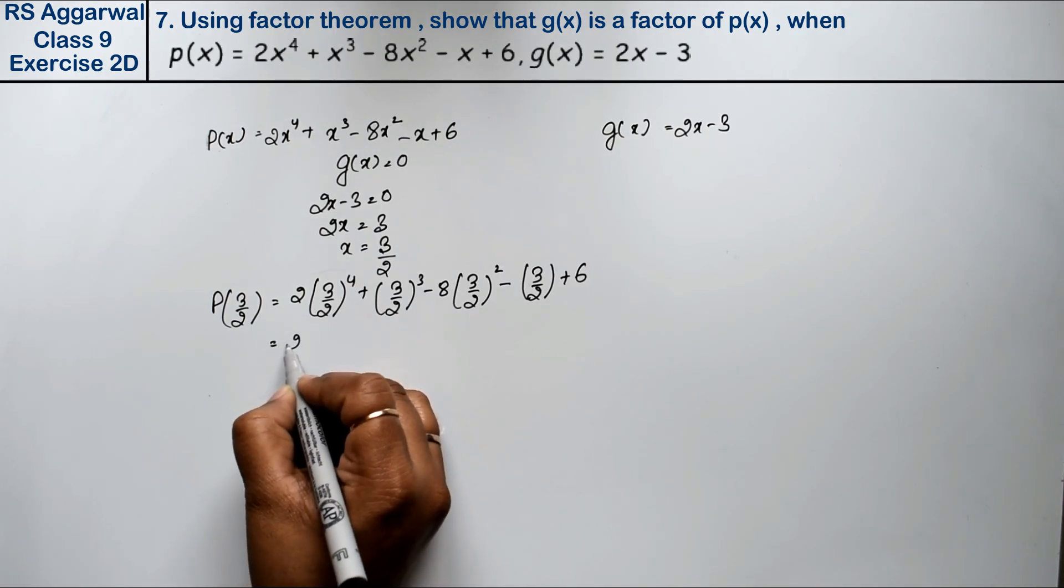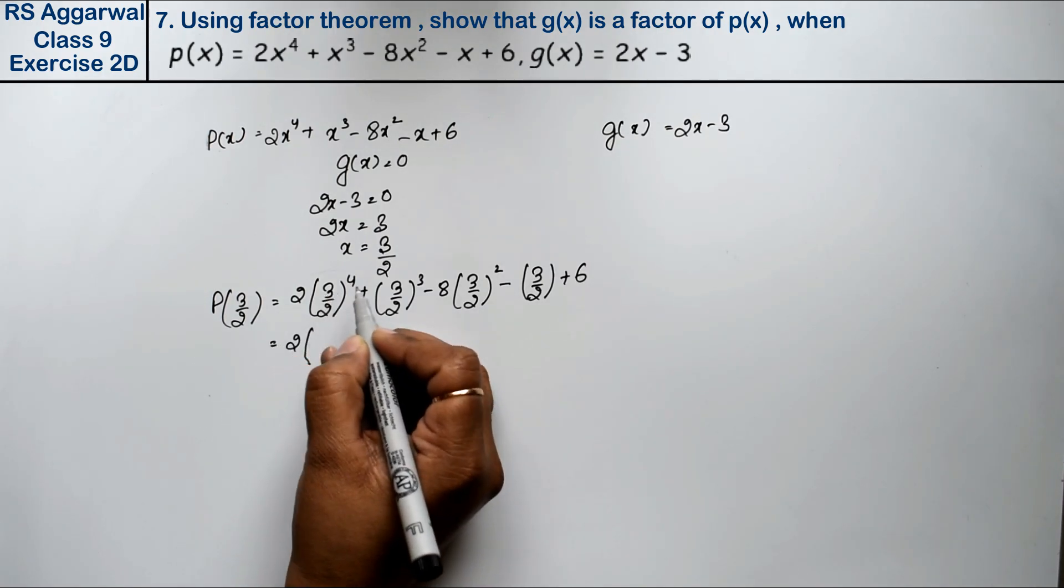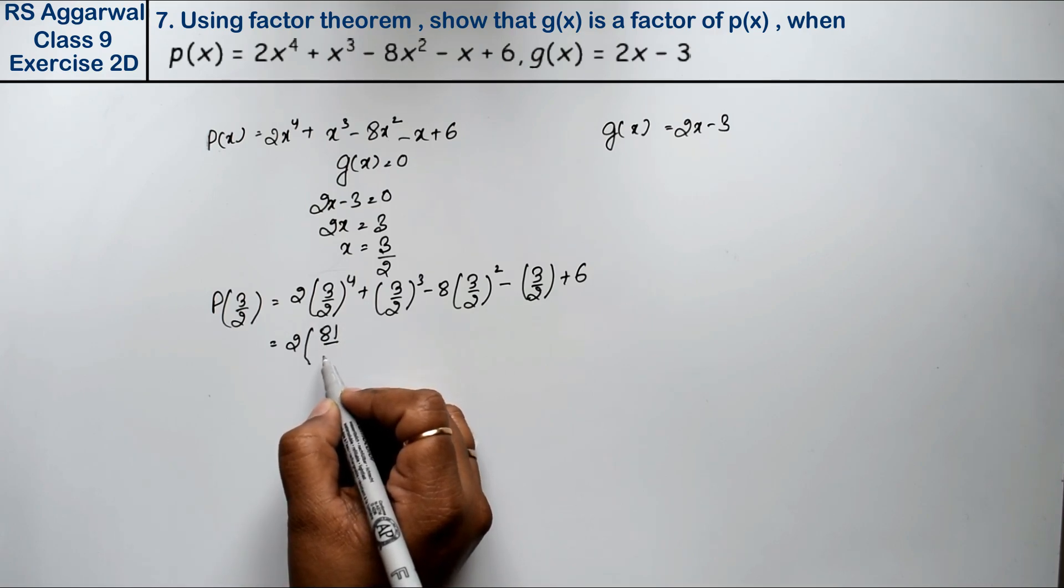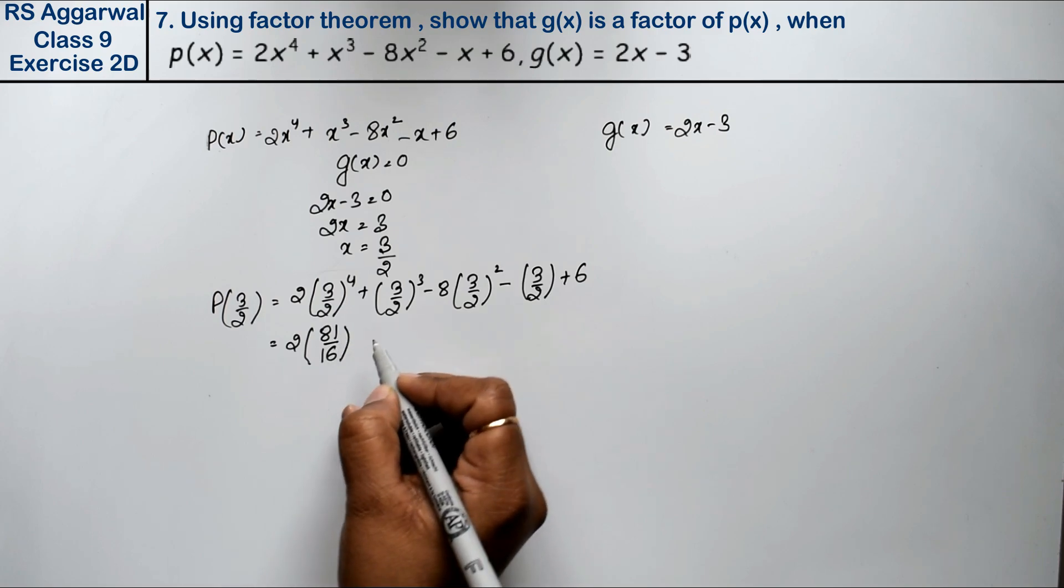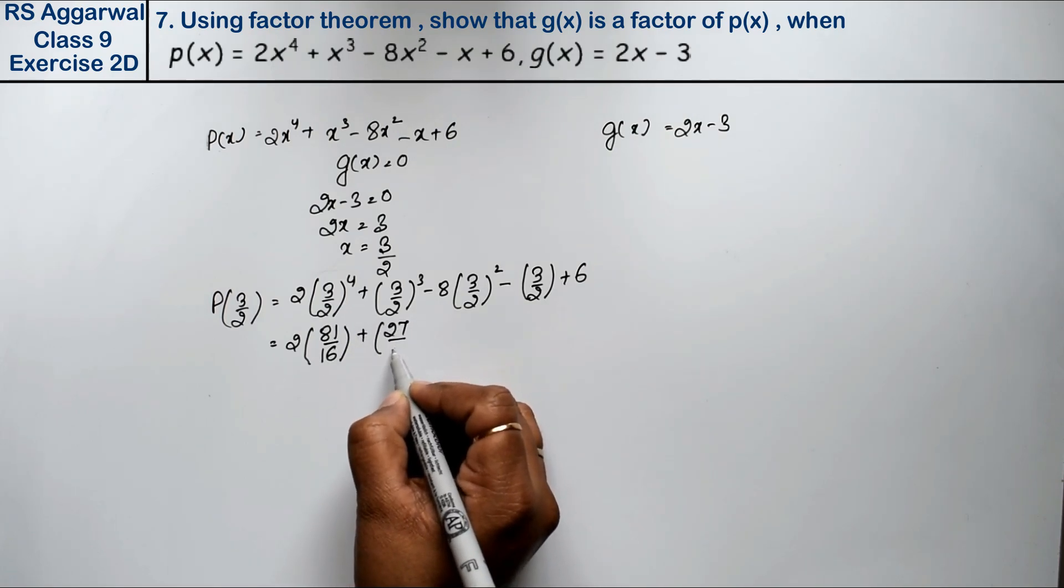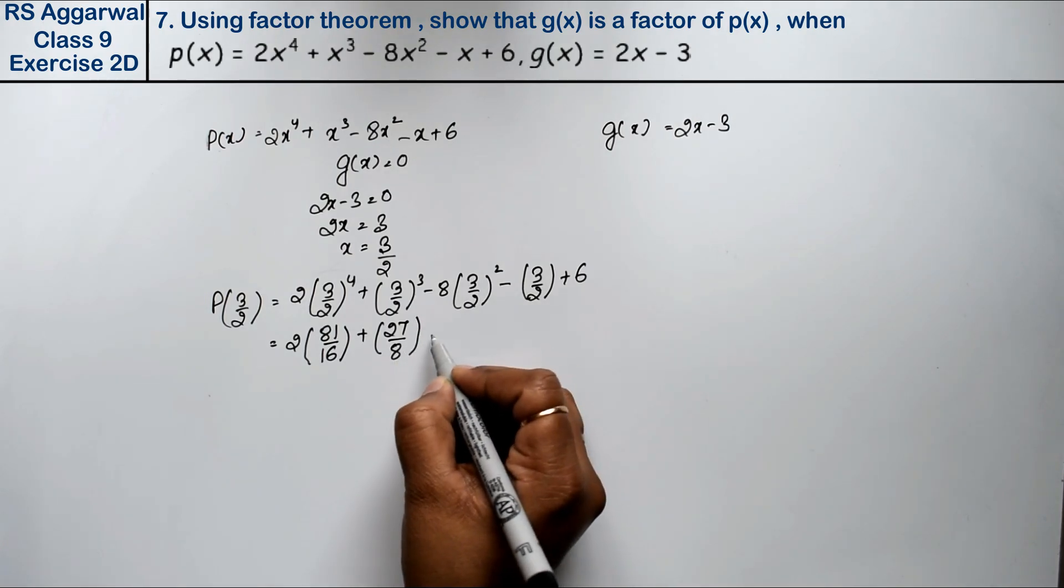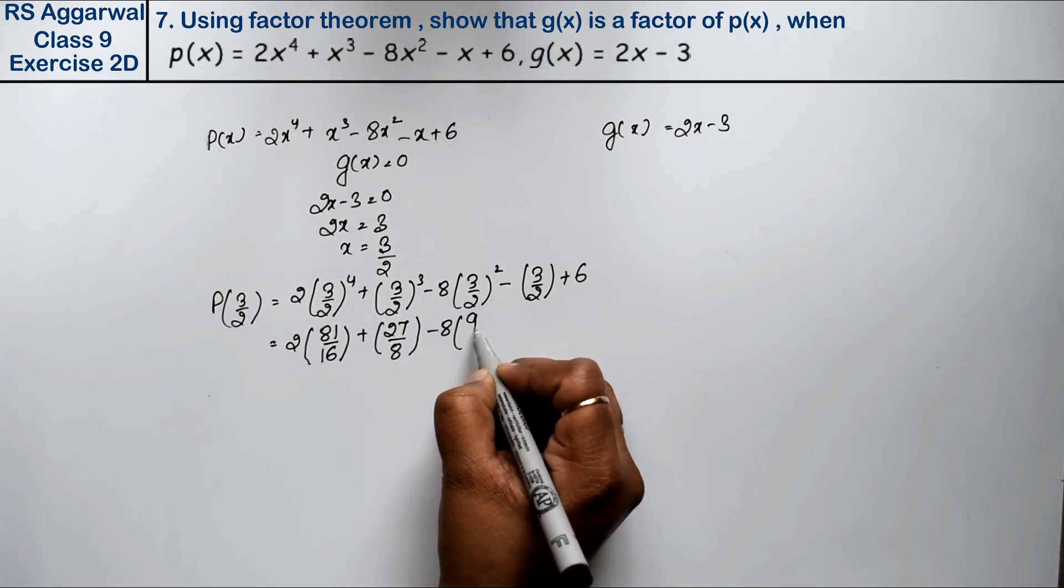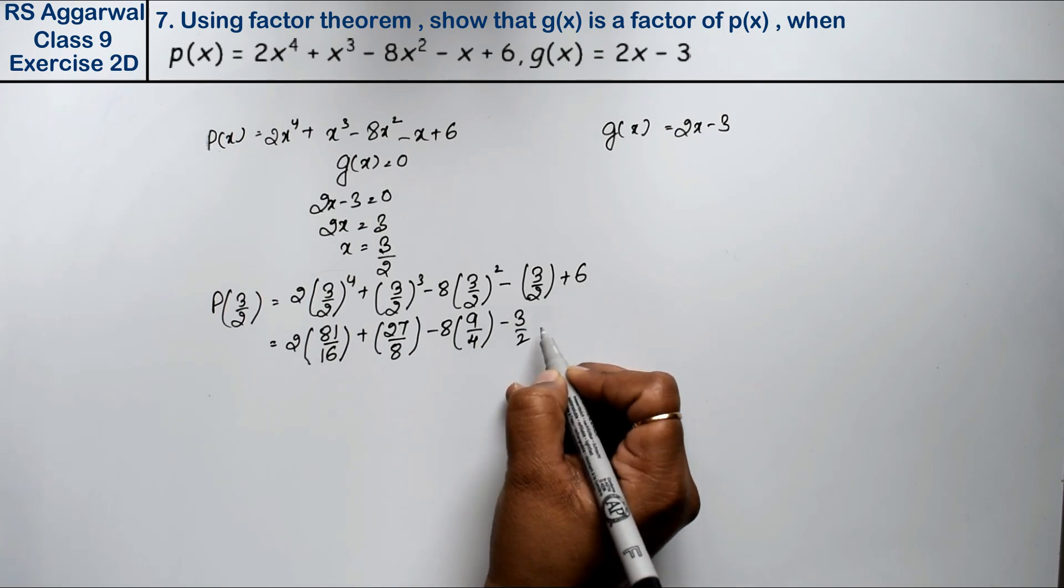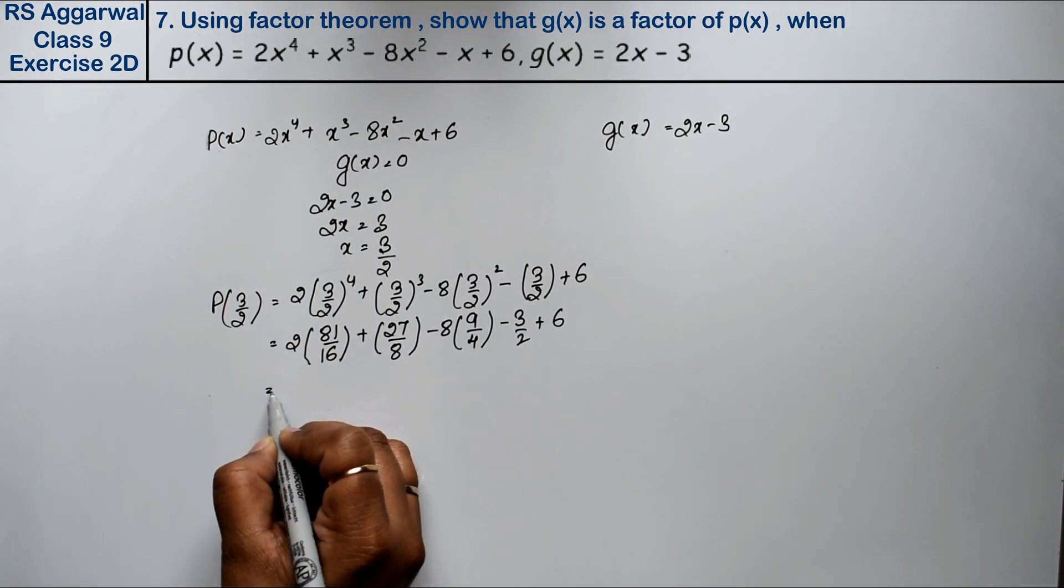So what did this become? 2 times 3 to the 4 times, that is 81 upon 2 times 2 is 4, 2 times 2 is 8, 8 times 2 is 16. Plus 3 times 3 is 9, 9 times 3 is 27, 2 times 2 is 4, times 2 is 8. Minus 8, 3 times 3 is 9, 2 times 2 is 4. Minus 3 upon 2 plus 6.